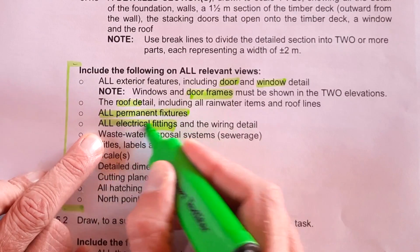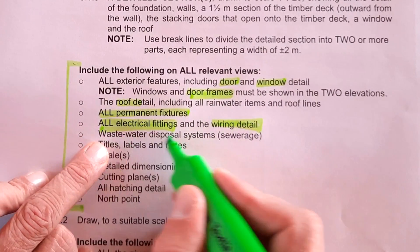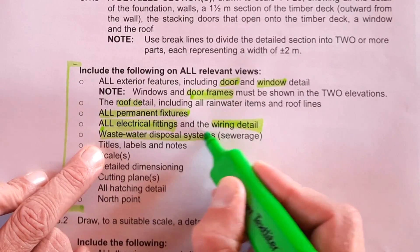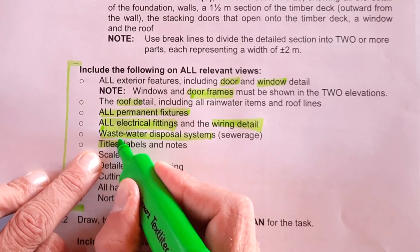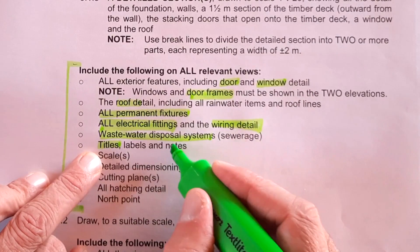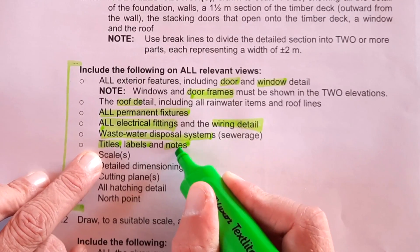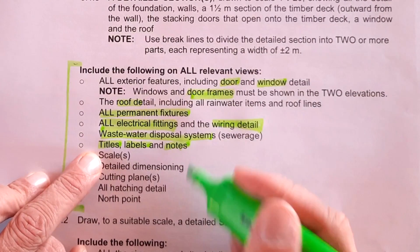All electrical fittings must be indicated. The wiring detail must be indicated. Your wastewater disposal system. That you need to indicate on this. Titles of every room. The labels. Is it a carpet? Is it a tile? Any additional notes that's going to go. These notes are going to go in your actual title panel on the side.